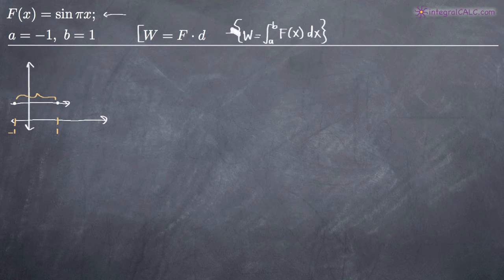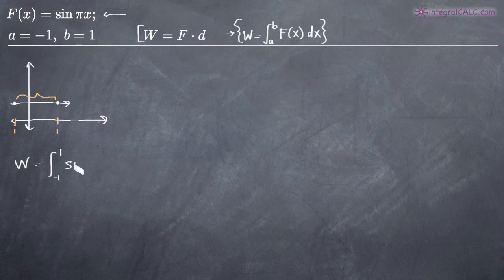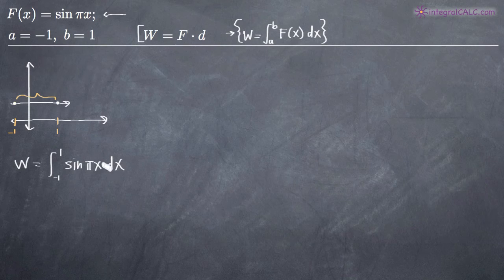We need to calculate the work done to move the particle between negative one and positive one. The way we do that is by using the work formula: we plug in our range a to b — negative one to positive one — and integrate the force function sine of pi x with respect to x. Integrating on that range gives us the amount of work required to move the particle that distance.